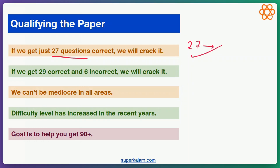Or let's say you attempt 35 questions, you correctly mark 29 and 6 are wrong — then also you will get around 67.5 marks. So even if you are not attempting half of the questions and you are attempting just 35 with accuracy of less than 80%, you will still be able to crack CSAT.